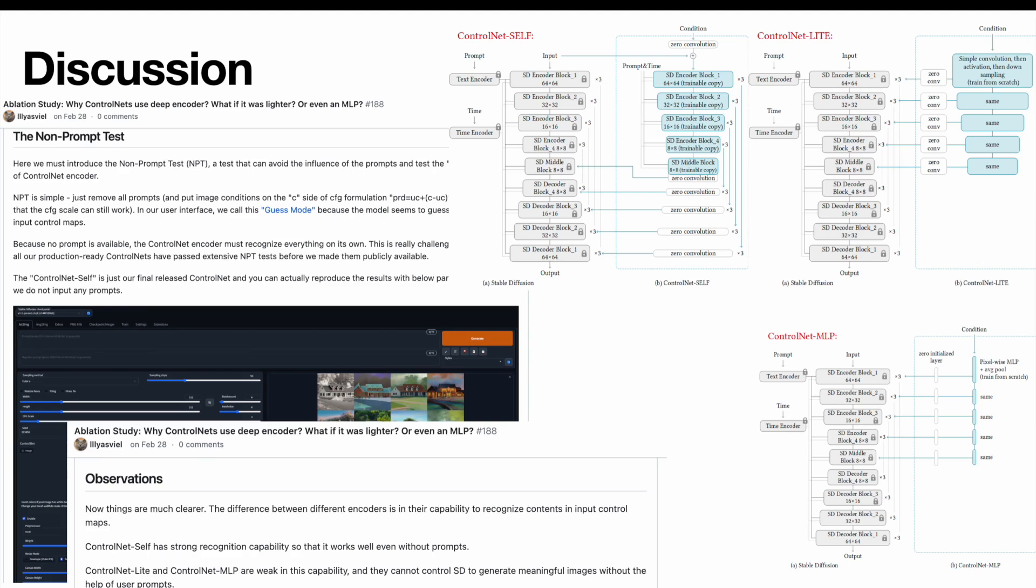There is also a very interesting and meaningful ablation study of why ControlNets use deep encoder on the official GitHub repo discussion section, which I strongly recommend you to read. So that's pretty much all of it. Thanks for watching and stay hungry.